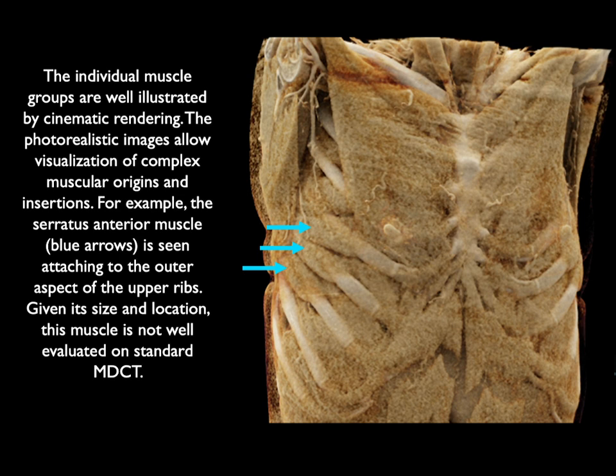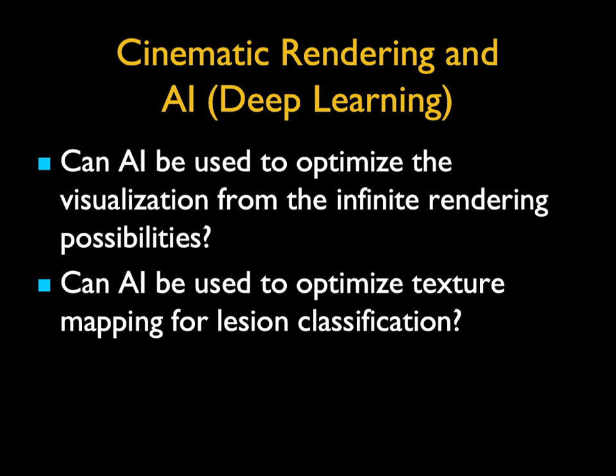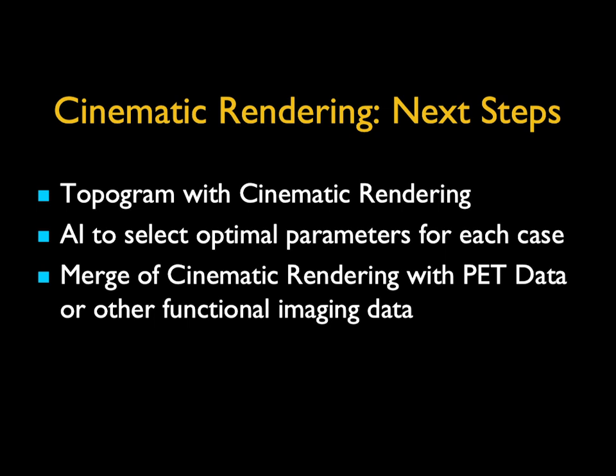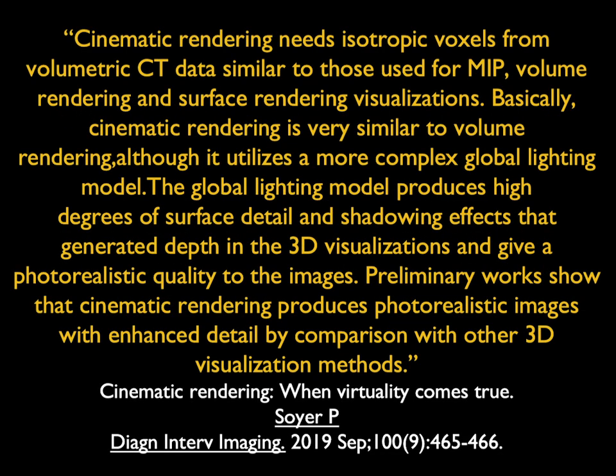It's something we're working hard on and will probably expand to other areas of the body. So, cinematic rendering and AI: can AI be used to optimize the visualization from the infinite rendering possibilities? We think so. Can AI be used to optimize texture mapping for lesion classification? Yes, we think that's possible. We think we can do topograms with cinematic rendering, with AI selection of the individual optimal parameters for each case. Can we merge cinematic with PET data or other functional imaging data? That will prove to be important. As noted in an editorial by Philippe Soyer, cinematic rendering needs isotropic voxels from volumetric CT data, similar to those used for MIP, volume rendering, and surface rendering. Cinematic rendering uses a more complex global lighting model that produces high degrees of surface detail and shadowing effects generating depth in 3D visualizations and giving a photorealistic quality to the images.